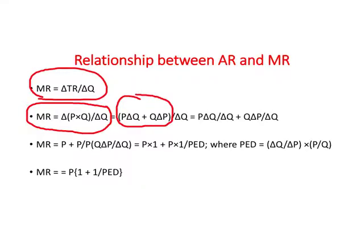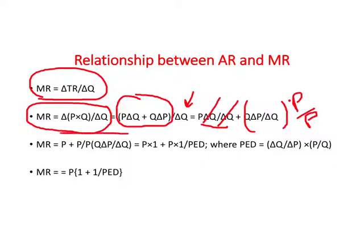This equals price times change in quantity plus quantity times change in price, all divided by change in output. Opening the parentheses and separating terms, you can cancel out the change in Q in the first part. As for the remaining expression, we can multiply and divide by P — mathematically it remains the same — which allows us to simplify further.